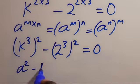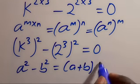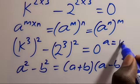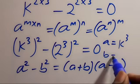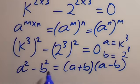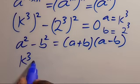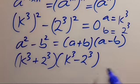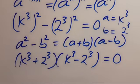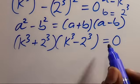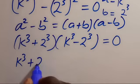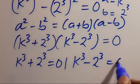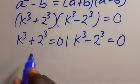The difference of two squares states: a squared minus b squared equals (a plus b)(a minus b). Here our a is k to the power of 3 and our b is 2 to the power of 3. Substituting, we get (k³ + 2³)(k³ − 2³) equals 0. So either k³ + 2³ = 0 or k³ − 2³ = 0. Let's take the first as Case 1.